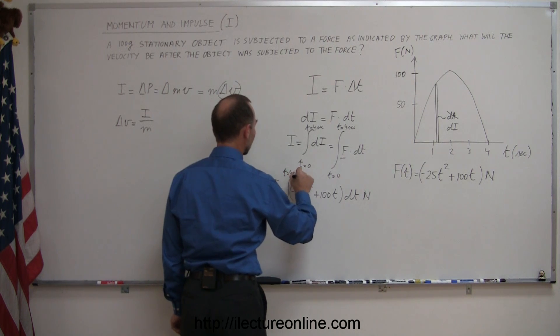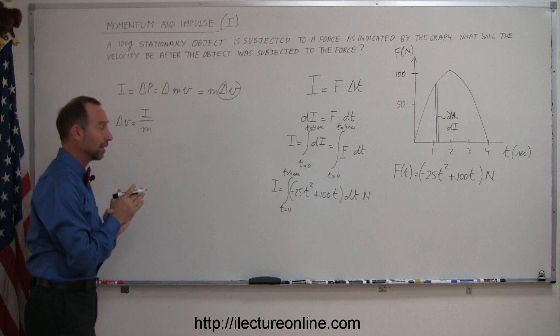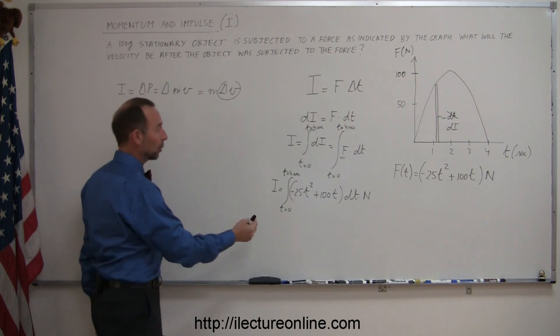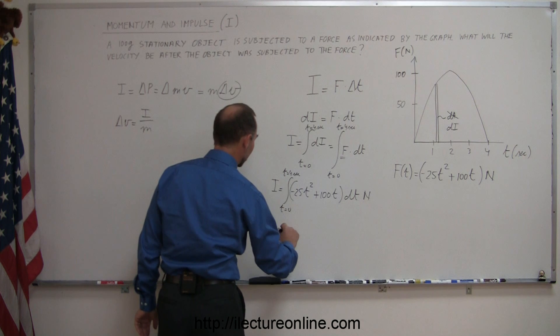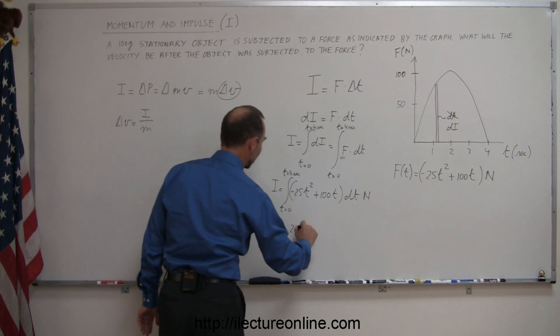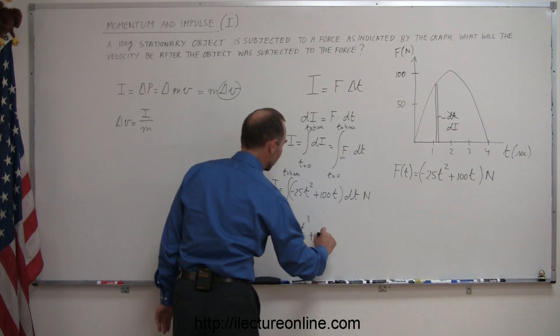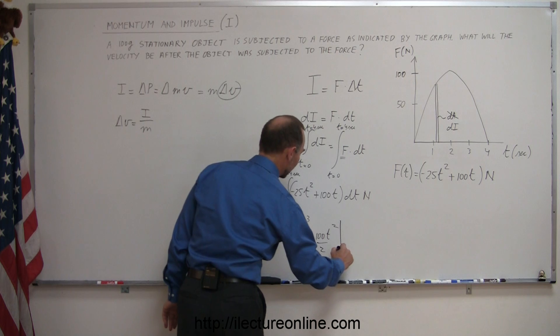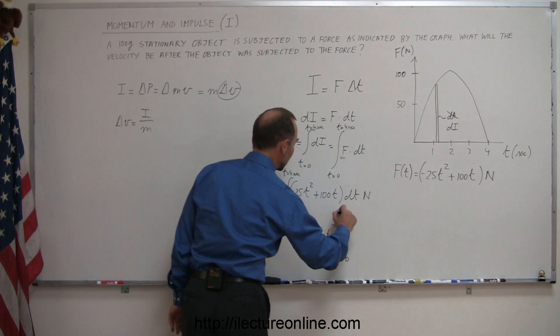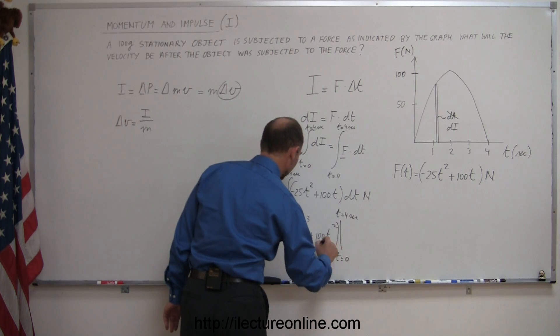That's called a definite integral. We have to integrate that, and if you remember the rules of integration, we simply add one to the exponent and divide by the new exponent. This equals -25t³/3 + 100t²/2, evaluated from t=0 to t=4 seconds.